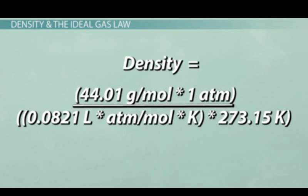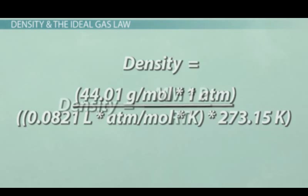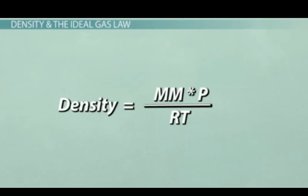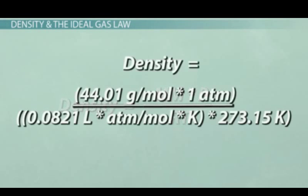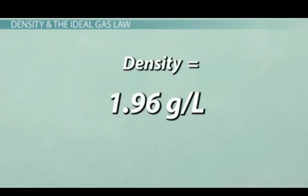273.15 kelvin is 0 degrees Celsius in the freezing point of water. So if we insert these values into our density equation, density equals molecular mass times P divided by RT, and solve for the math, we'll find that the density is 1.96 grams per liter.